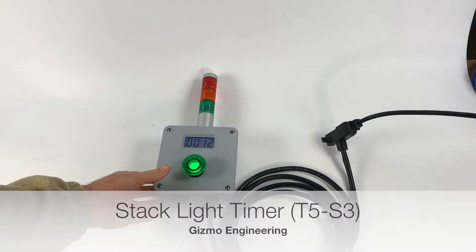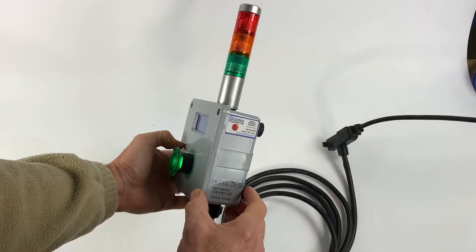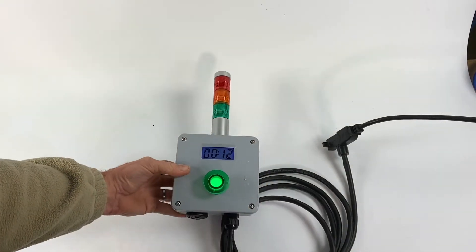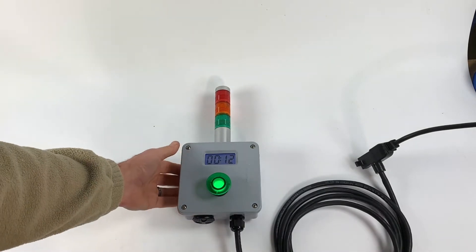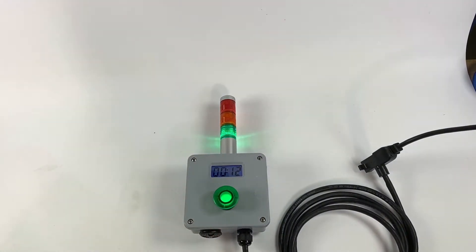Hi everyone, this is our T5 timer and T5-S3. This is to show the stack light which makes it a little different than the standard model of the T5 timer. Just to give you an idea of how it looks in operation.